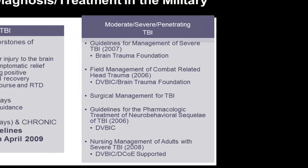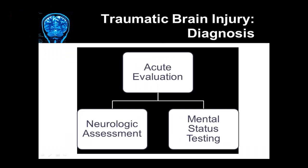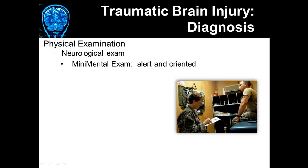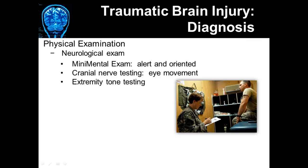After someone sustains a concussion, the initial step is an acute evaluation involving a neurologic assessment and mental status testing. The neurological exam involves a mini-mental exam to assess if the individual is alert and oriented. There's also cranial nerve testing, muscle tone testing, reflex testing, strength testing of the muscle, and postural stability — the ability to maintain balance.